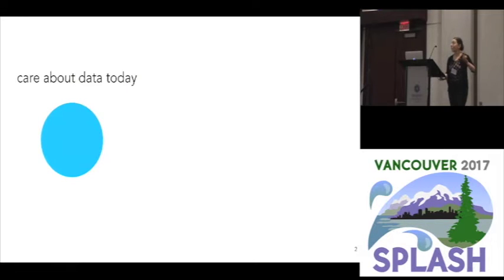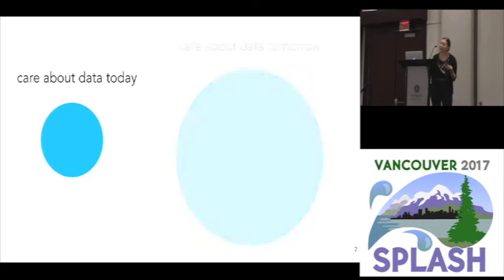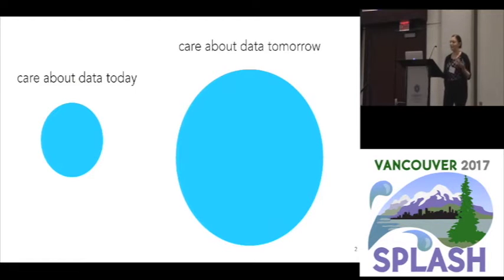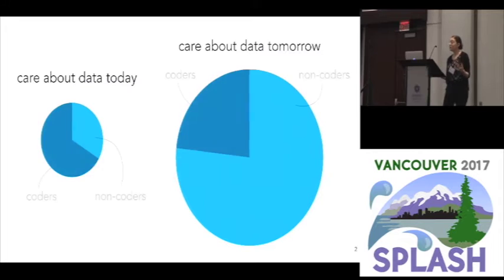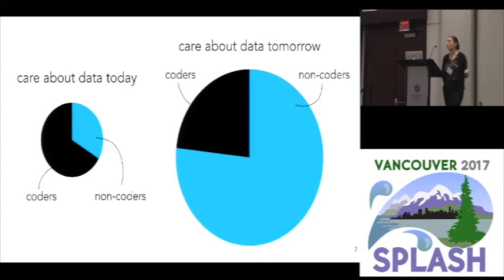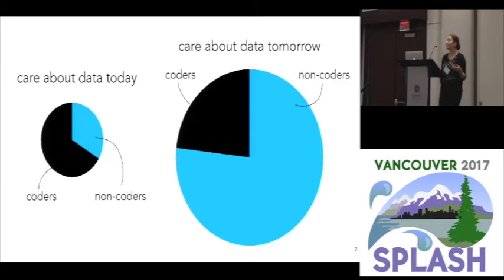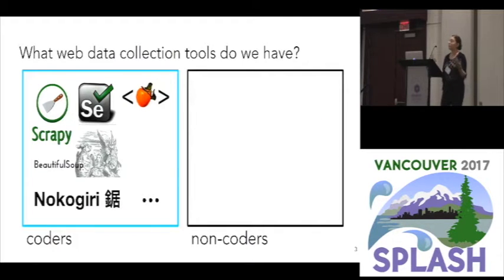I'm going to start by asserting that there are two kinds of people in the world: the people who already care about data today and everybody else who is going to care about data tomorrow. We're seeing more and more people starting to care about collecting and analyzing data, and what's even more interesting is that we're starting to see more and more non-coders get interested in this. As you heard in the keynote this morning, non-coders are really interested in using their computers to collect information, and right now they don't especially have good tools to do so — and that's especially true in the case of collecting web data.